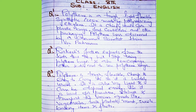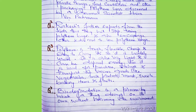Question number three: Why is polythene widely used? Polythene is tough, flexible, cheap, and easy to carry, and so it is widely used. It is also very light and can be disposed of easily, so it is used for purchase, storage, and transport of various goods like vegetables, milk products, meat, sweets, bakery items, and fruits.